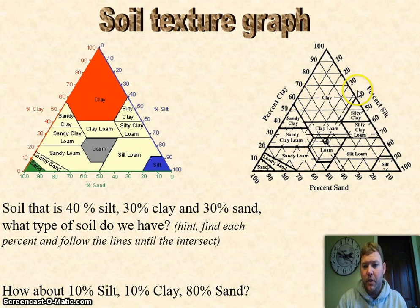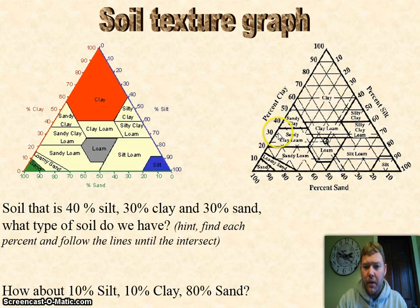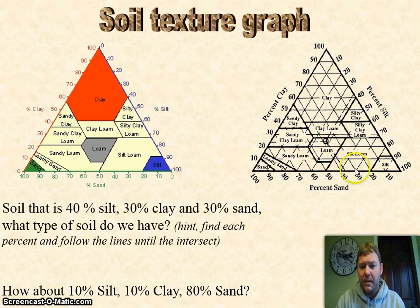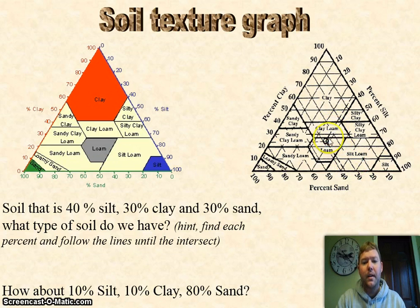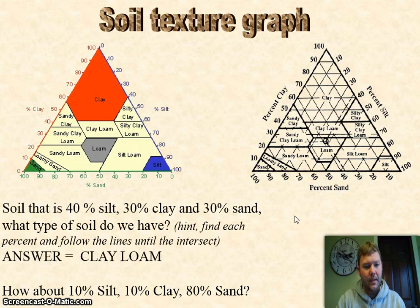Here's forty percent silt — this line comes down like this. Then thirty percent clay comes straight across. And then thirty percent sand — follow that up, and where all three meet is right in that box called clay loam.